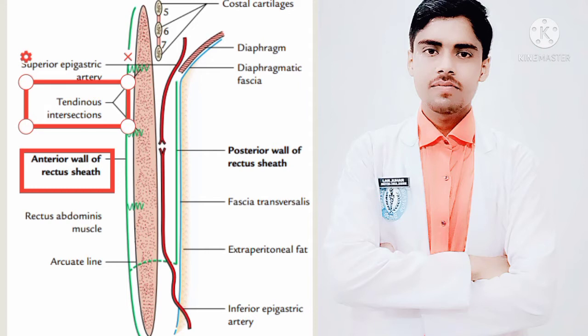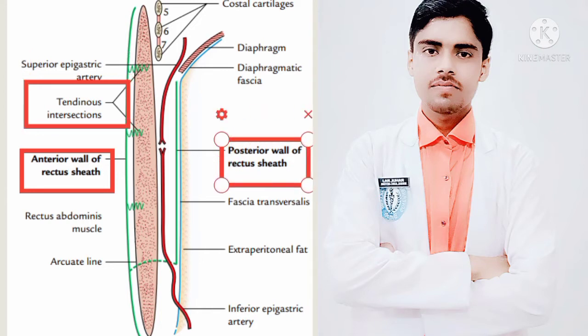Now we will discuss about the posterior wall of the rectus sheath. As you can see in the figure, this is the posterior wall of the rectus sheath. It is complete but is deficient above the costal margin and below the arcuate line, and in those regions it is free from the rectus sheath.